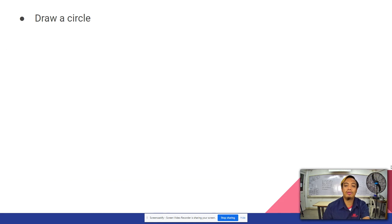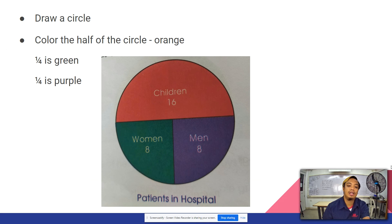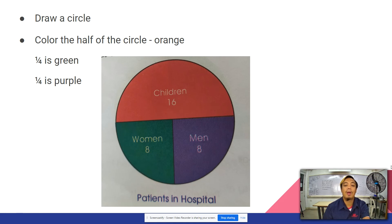The first thing we will do is draw a circle. We will color the children's section orange because that is 1 half. 1 fourth is green and 1 fourth is purple. We have to label each part: children 16, women 8, men 8.